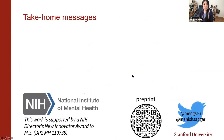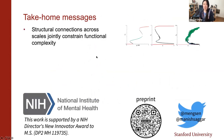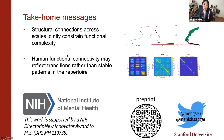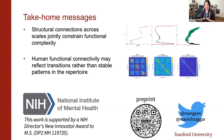The take-home messages are: functional complexity — the repertoire of all possible stable patterns — is shaped by structural connectivity across multiple scales. And the functional connectivity we observe in human fMRI data may reflect transitions between stable patterns of brain activity more than the stable activity patterns themselves. With that, I conclude and take any questions.